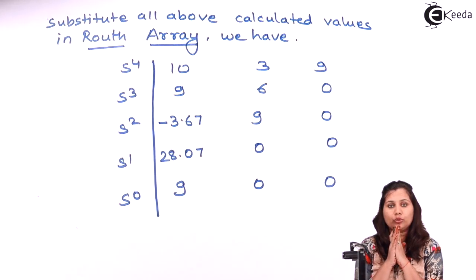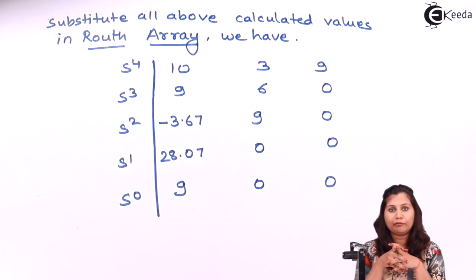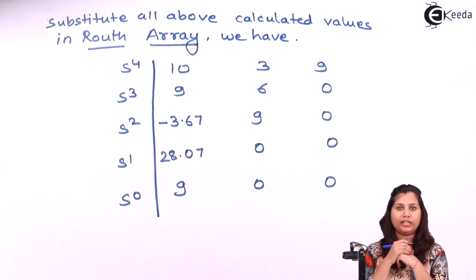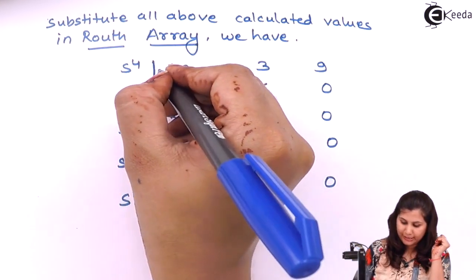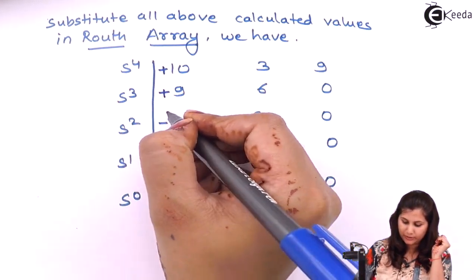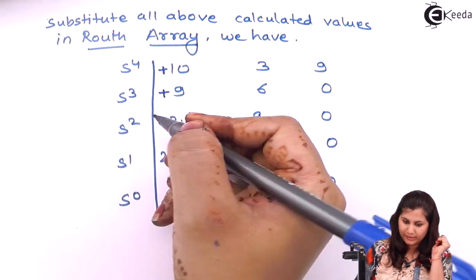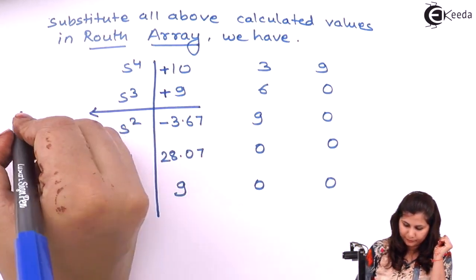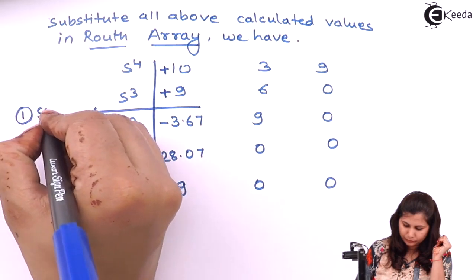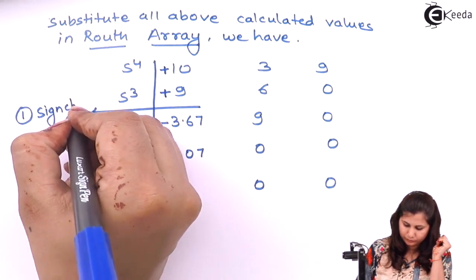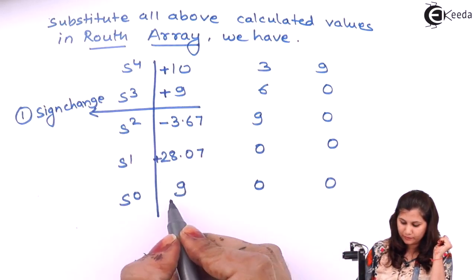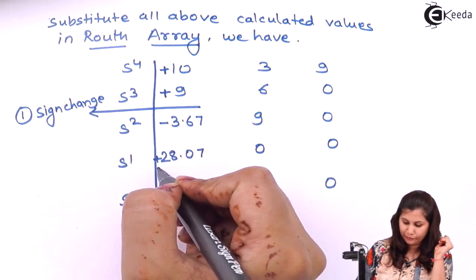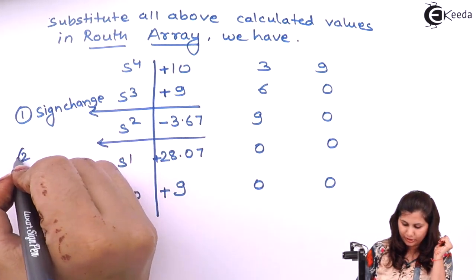To obtain the stability, we have to check the number of sign changes in the first column of the array. The first column values are: 10 (positive), 9 (positive), −3.67 (negative) — that is one sign change. Then −3.67 (negative) to 28.07 (positive) — that is another sign change. And 9 is also positive.